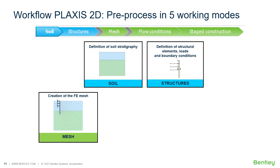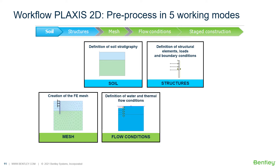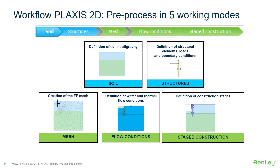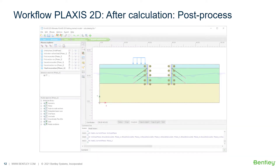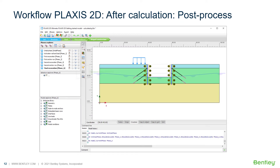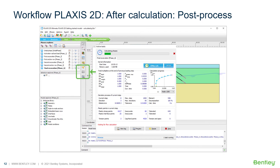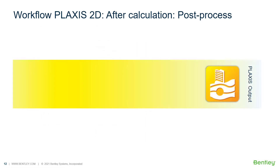When the geometry is done, we go to the mesh mode where we actually create the finite element mesh. That is followed by the flow conditions mode, where we set up the configuration needed for groundwater and flow conditions. Finally, the definition of construction stages is done in the stage construction mode, where we set up our different calculation phases to simulate construction in stages. Once that is done, we start the calculation process and in the post-processing, we can inspect the results.